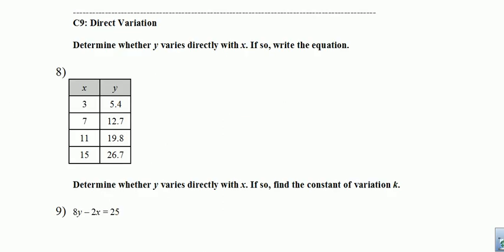All right. Some questions that get at direct variation here. This number eight says, Determine whether y varies directly with x. That's a yes or no question. We need to answer yes or no. If it's yes, we need to write an equation. Only if it's yes. So let's see what we can find out here. If it's going to vary directly with x, then all the y divided by x values here would be the same. So if I take 5.4 and divide by 3, I get 1.8. If I take 12.7 and divide by 7, I get 1.81429 and others. So this is not a direct variation because these values aren't the same.